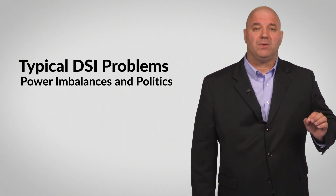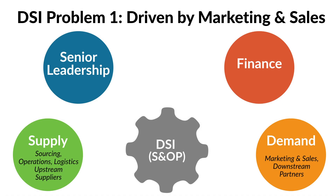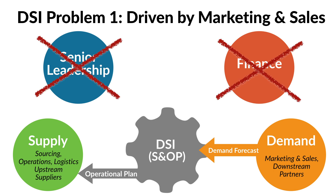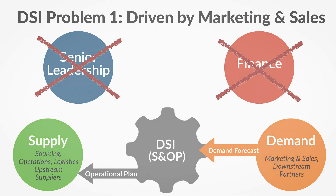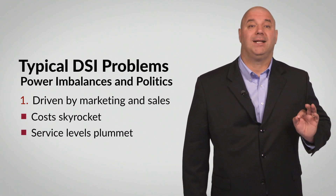Very few companies do this well because of internal power imbalances or politics. For example, some firms are completely driven by powerful marketing and sales groups. In these organizations, the uninhibited pursuit of sales at any cost dictates that aggressive sales forecasts become the operational plan. Capacity constraints or capabilities are ignored, and the supply side of the business should just figure it out. Senior management and finance are often uninvolved in these organizations, and this is a recipe for disaster, because costs eventually skyrocket or service levels plummet.